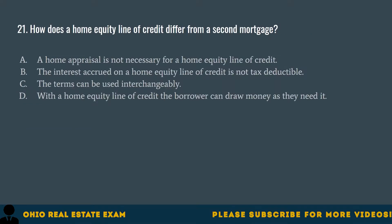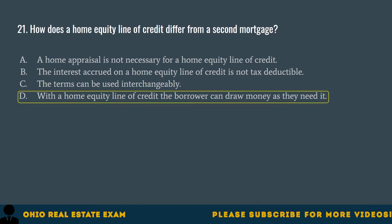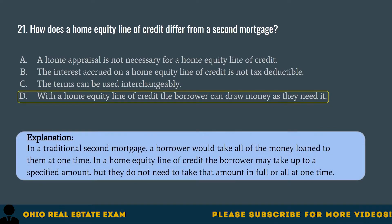Question 21. How does a home equity line of credit differ from a second mortgage? A. A home appraisal is not necessary for a home equity line of credit. B. The interest accrued on a home equity line of credit is not tax deductible. C. The terms can be used interchangeably. D. With a home equity line of credit, the borrower can draw money as they need it. The correct answer is D. In a traditional second mortgage, a borrower takes all of the loan money at one time. In a home equity line of credit, the borrower may take up to a specified amount, but does not need to take it all at once.